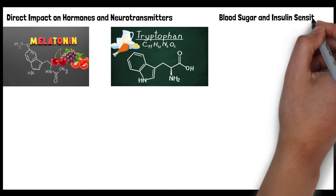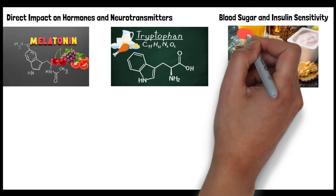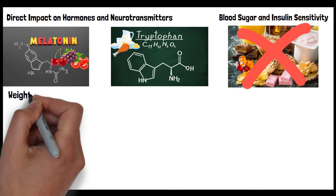Blood sugar and insulin sensitivity. A balanced diet that is low in refined sugars can help maintain stable blood sugar levels, which is important for good sleep. Fluctuating blood sugar can lead to wakefulness at night. A diet rich in whole, unprocessed foods can improve insulin sensitivity, which is linked to better sleep quality.